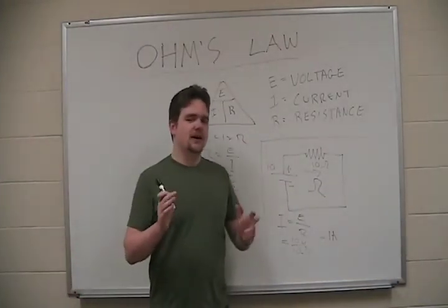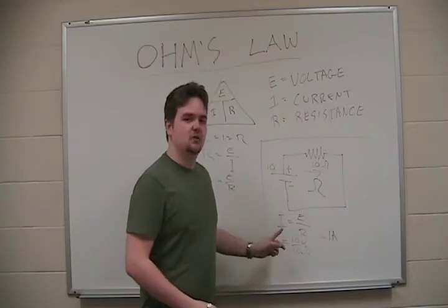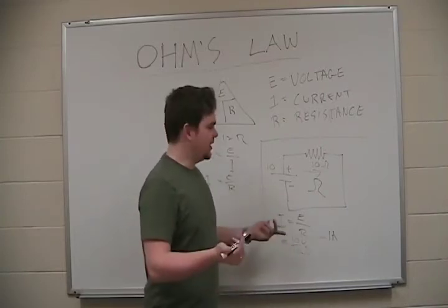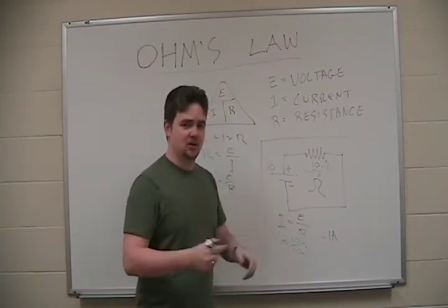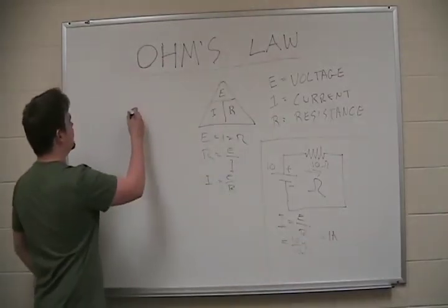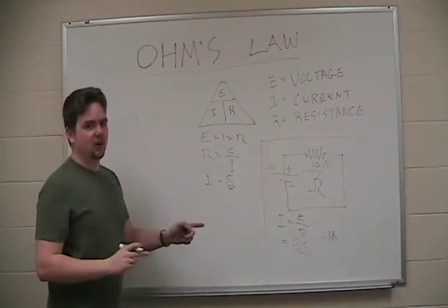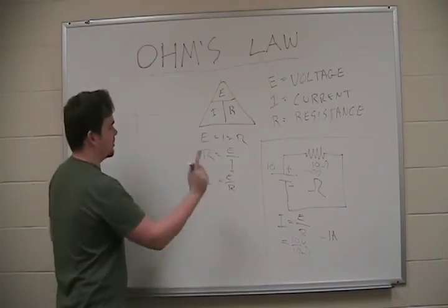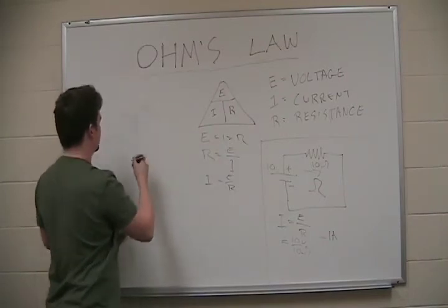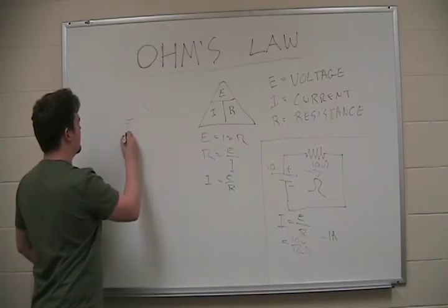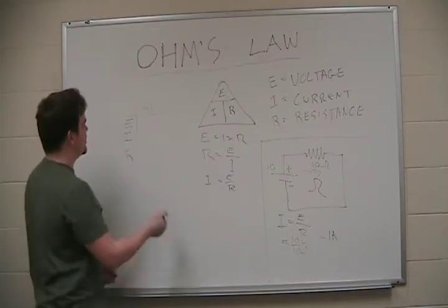So whenever we're trying to decipher a circuit, I find the easiest thing to do is always make a table. Now here we didn't really need to because we were only missing the variable of current. But if we wanted to, just for the sake of making a table, here's how I would personally go about it. And I found this saved me a lot of time in school. Let's just do it over here. Always set up a table with however many resistors you have.